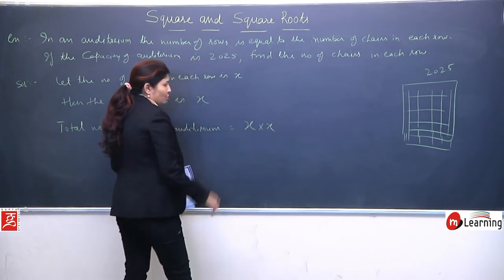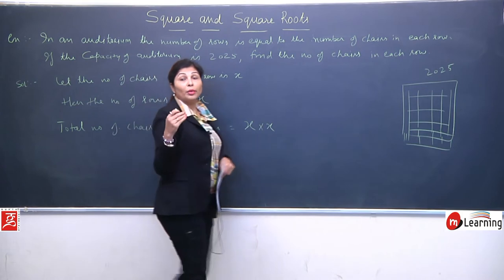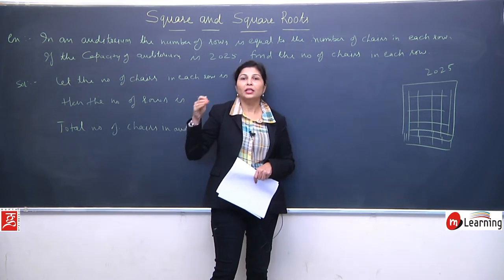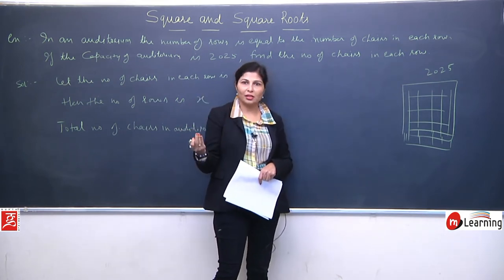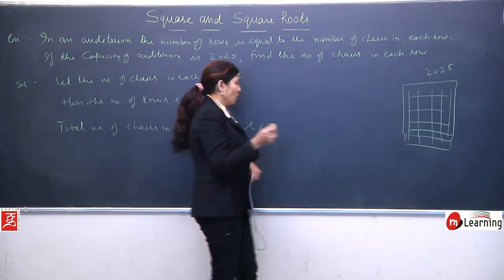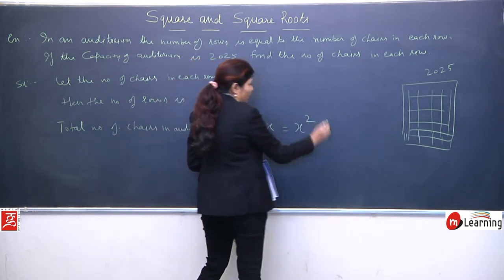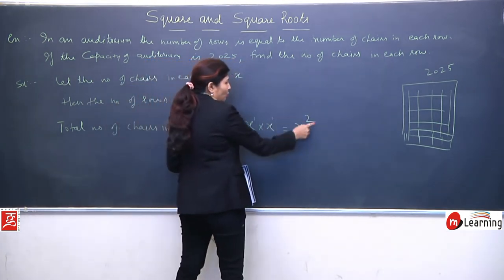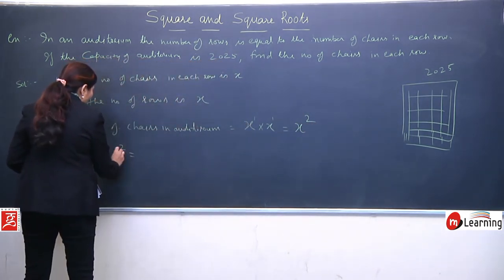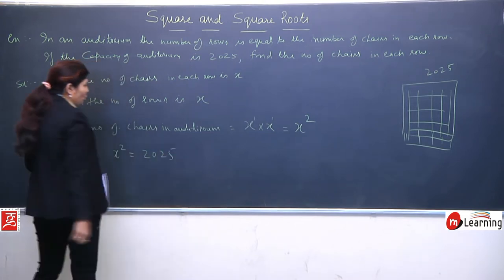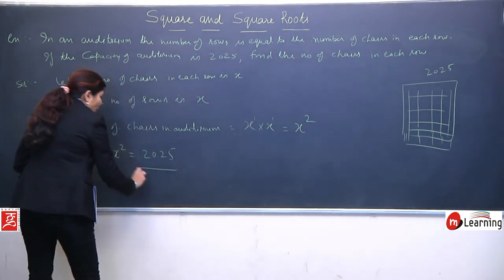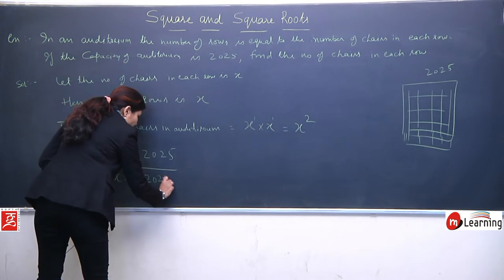However many chairs, that many rows. So total number of chairs in auditorium is x into x. We cannot take different numbers, different variables, because they are clearly saying however many rows, that many chairs. So if we take variable x, then x chairs and x rows, so x into x means x square. Because base is same, powers add. This total we're given is x square which equals 2025.